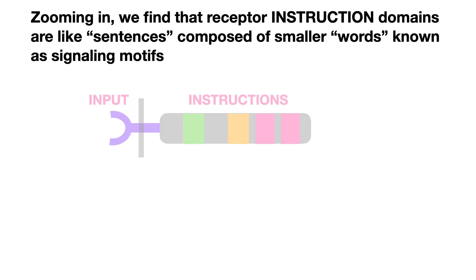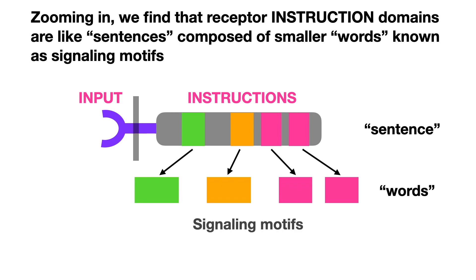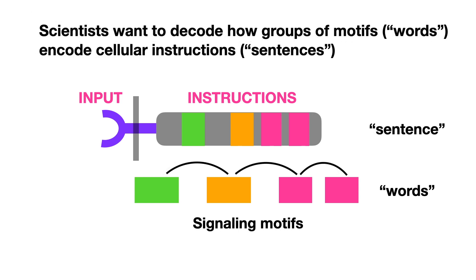Zooming in we find that receptor instruction domains are like sentences composed of smaller words known as signaling motifs. Scientists want to decode how groups of motifs or words encode cellular instructions.